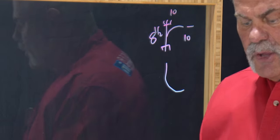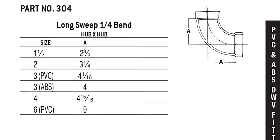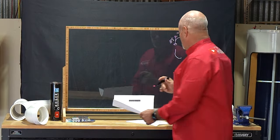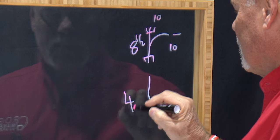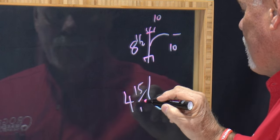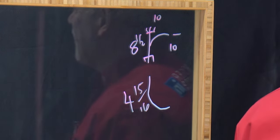So now I know my dimensions there. Now I'm going to come over to my long sweep. And it's four and 15 sixteenths. Both ways. So it's really easy.